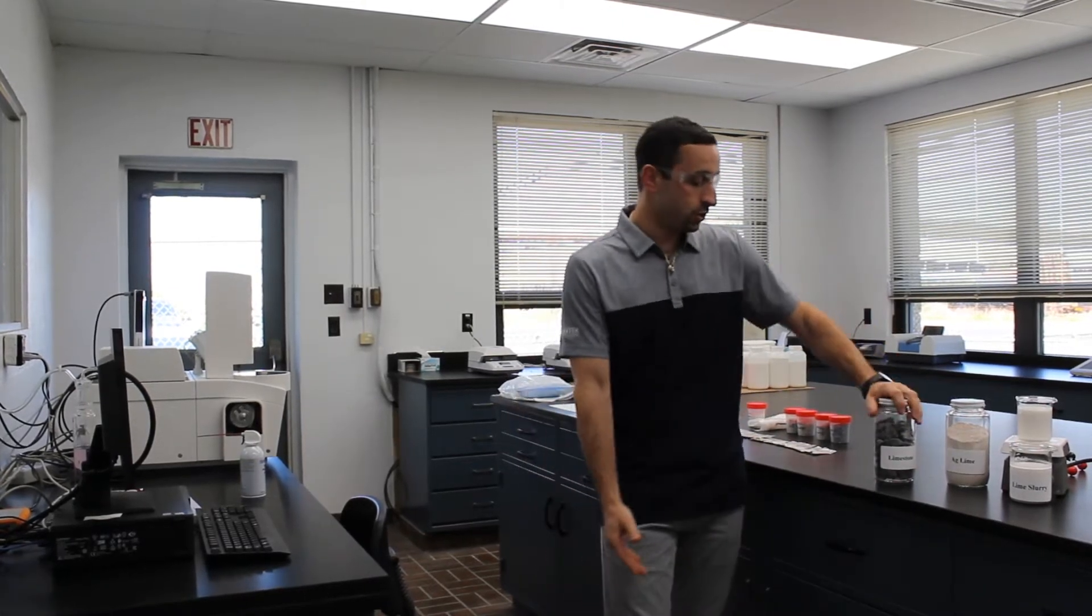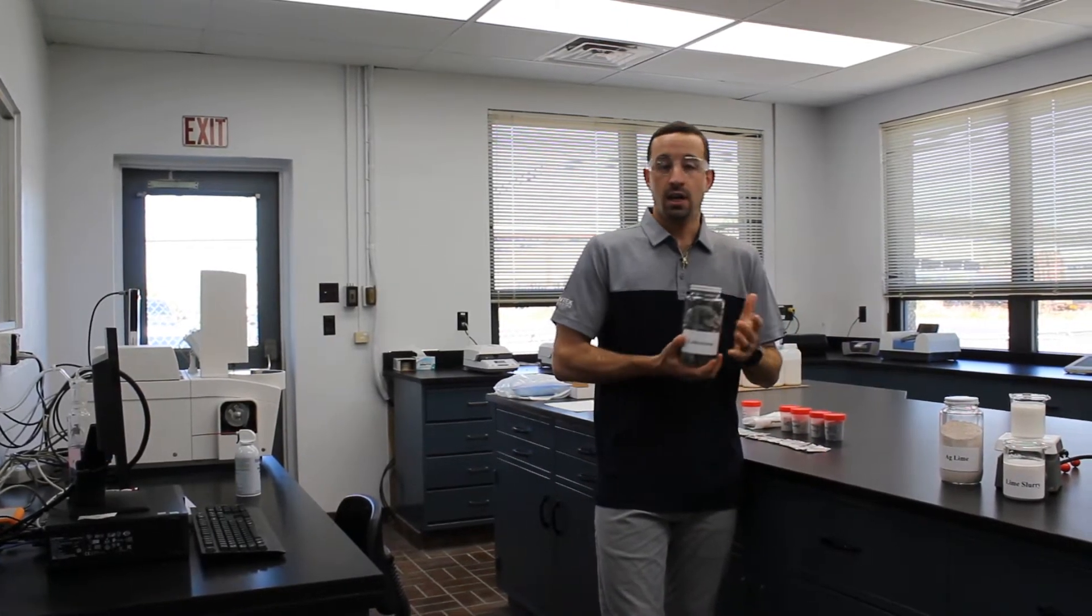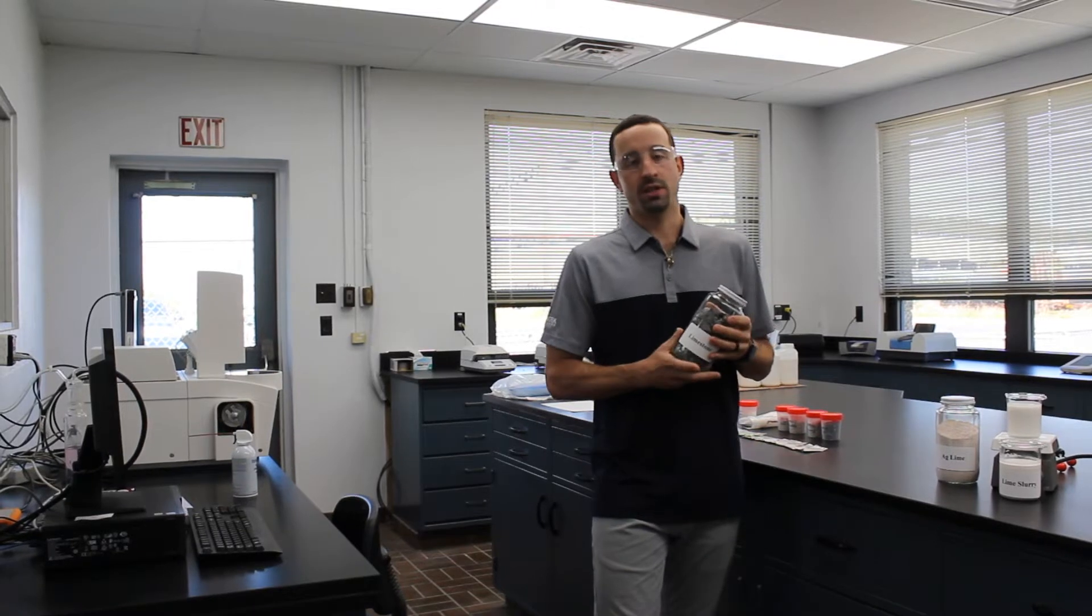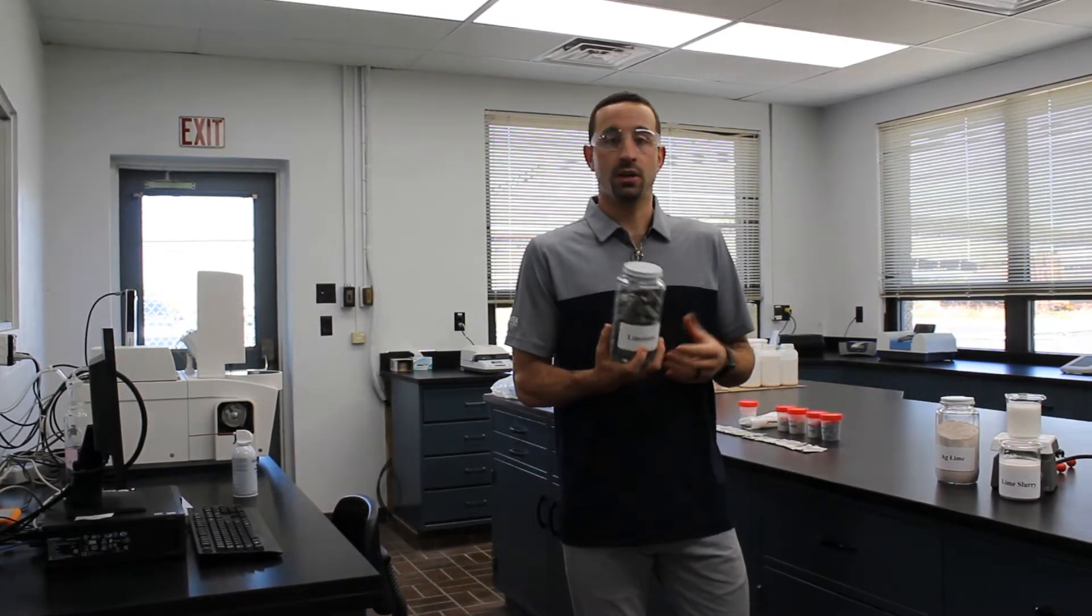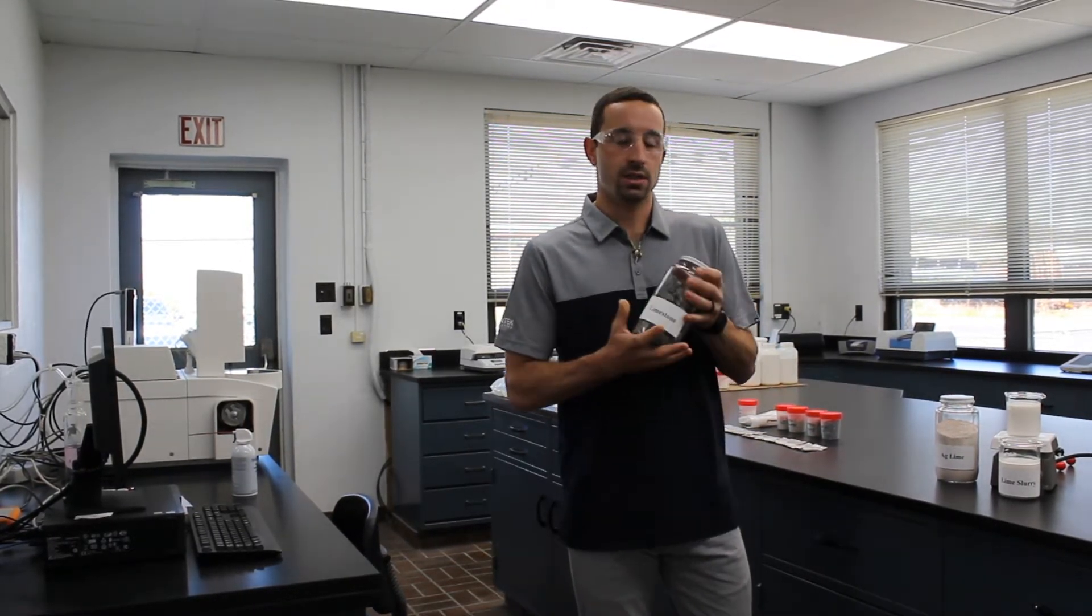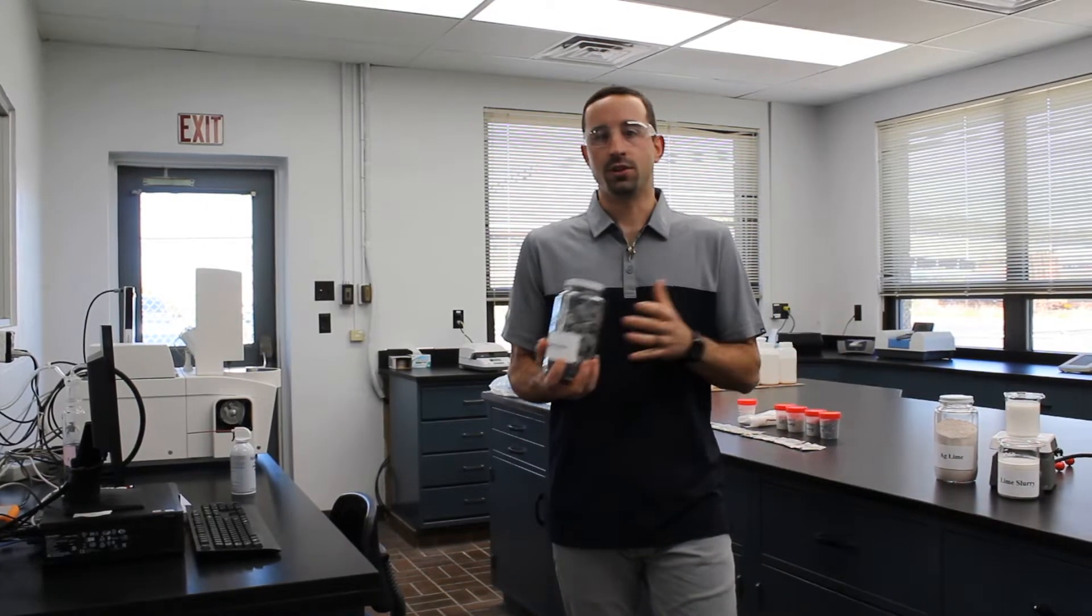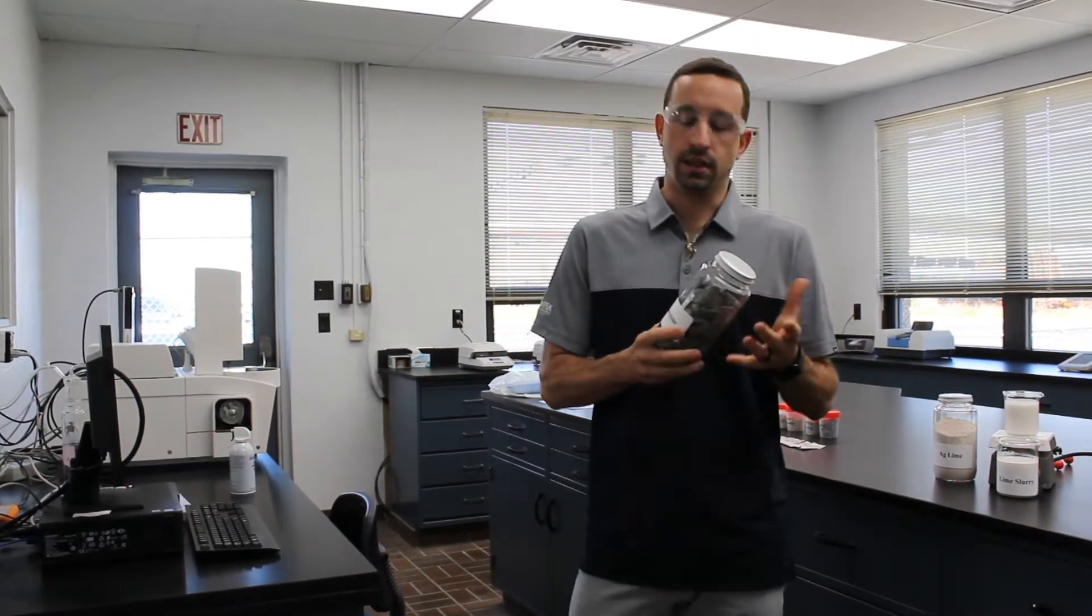So we can sort limestone based upon its magnesium content. High calcium, or as we call it here in the lab, just high cal, is almost entirely calcium carbonate, whereas elevated levels of magnesium give us dolomitic limestone. And so when we're thinking about high cal versus dolo, all we're talking about is the level of magnesium.